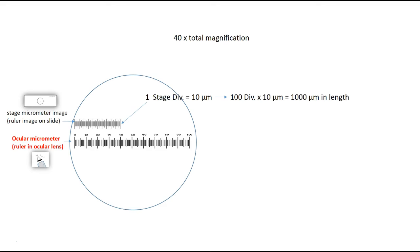If you need to rewind the video to make sure you catch it, please go ahead. Now, can you tell me how long the red specimen is in this picture? Using red dotted lines, the specimen spans from division 20 to division 45, so 45 minus 20 equals 25 divisions. Each division is 2.5 micrometers, so this red specimen is 25 times 2.5 — that's 62.5 micrometers in length.